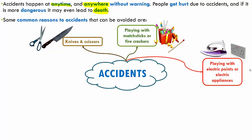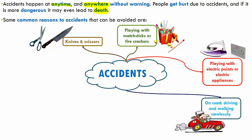Accidents can also happen because somebody is playing with electrical points, trying to put their hands into a socket, or because of electrical appliances. You should keep away from these things, and even if you are using them, use them very carefully. Another main reason is carelessness on the road — either while driving or while walking. You need to be aware of your surroundings and drive carefully and slowly.